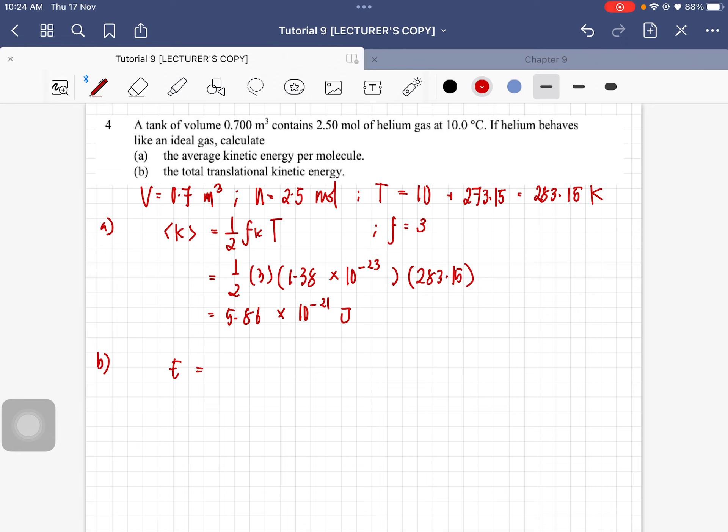So E is equal to the N times dengan D translational kinetic energy tadi, which is this one here. This can also be written as ktr lah, kinetic energy, average kinetic energy. Itupun kamu just boleh directly guna 3 over 2 NKT.